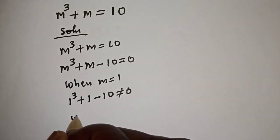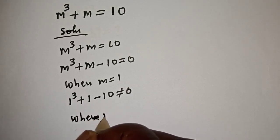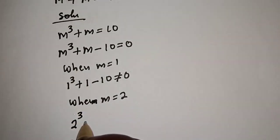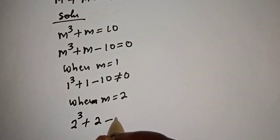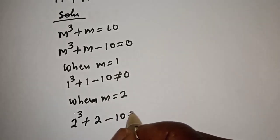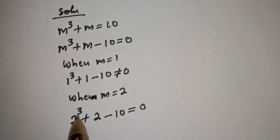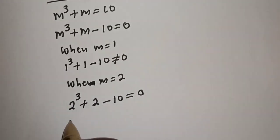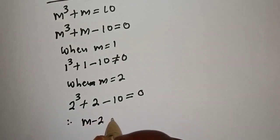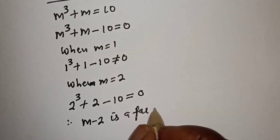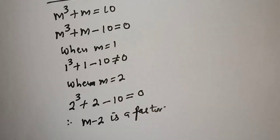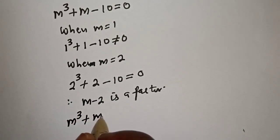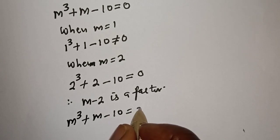Now let's consider when m is equal to 2. Then m cubed plus m minus 10 gives 2 cubed plus 2 minus 10, which equals 8 plus 2 minus 10, and that is equal to 0. So m minus 2 is a factor.